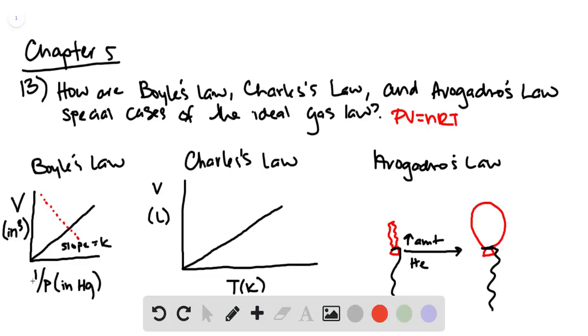And so what that means is that pressure is inversely related to volume such that as the pressure goes down, as the pressure gets smaller, this 1 over p value becomes larger, the volume increases.